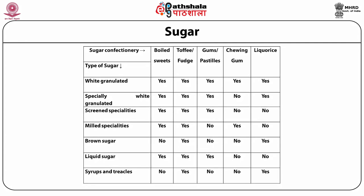From the table, it is clear that white granulated sugar can be used for the preparation of all confectionery products. White granulated and screened specialties are the other forms which can be used for almost all confections except chewing gum. Brown sugar and syrups can only be used for toffee, fudge, and liquorice. Toffee and fudge can be prepared from any form of sugar, whereas chewing gum is the least feasible product for sugar.